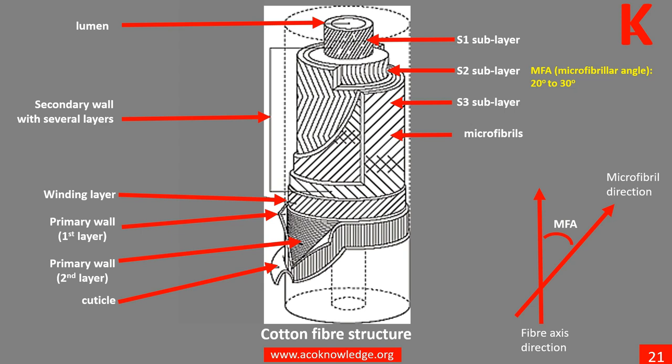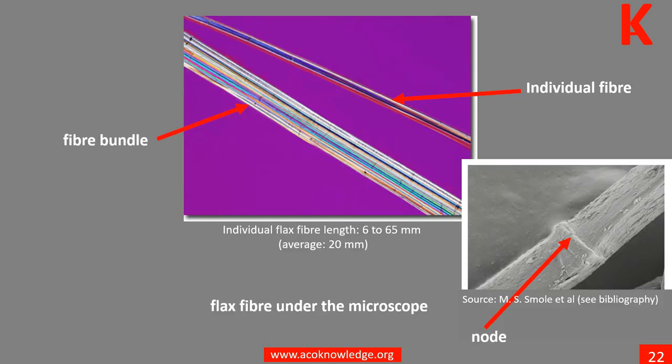The MFA — the microfibrillar angle — gives an indication of the orientation of the microfibrils in the fiber. A lower MFA is correlated with higher strength and stiffness of the fiber. Learn more in Unit 8.